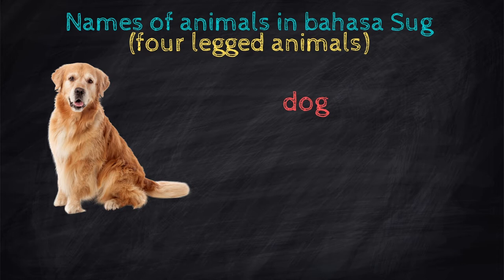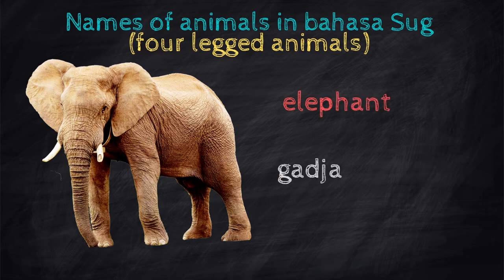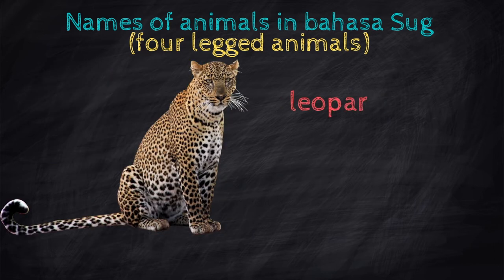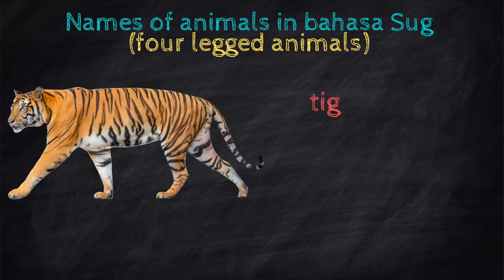Dog — Iro. Elephant — Gaggia. Leopard — Kutingjanggi. Tiger — Halimau.